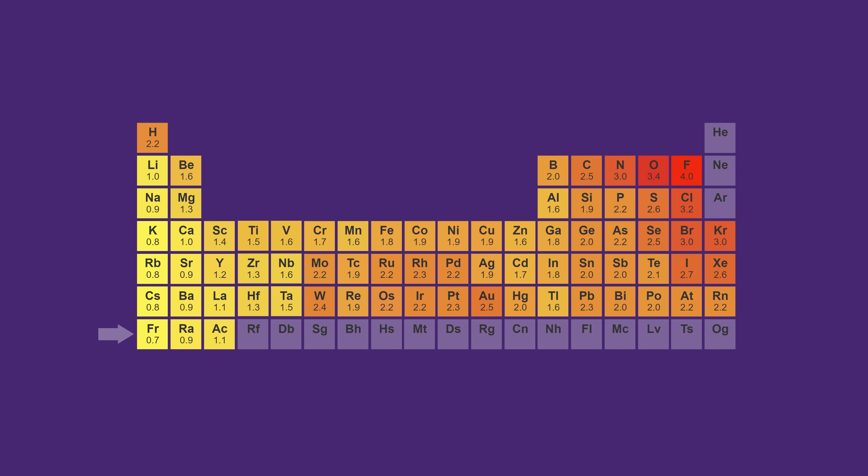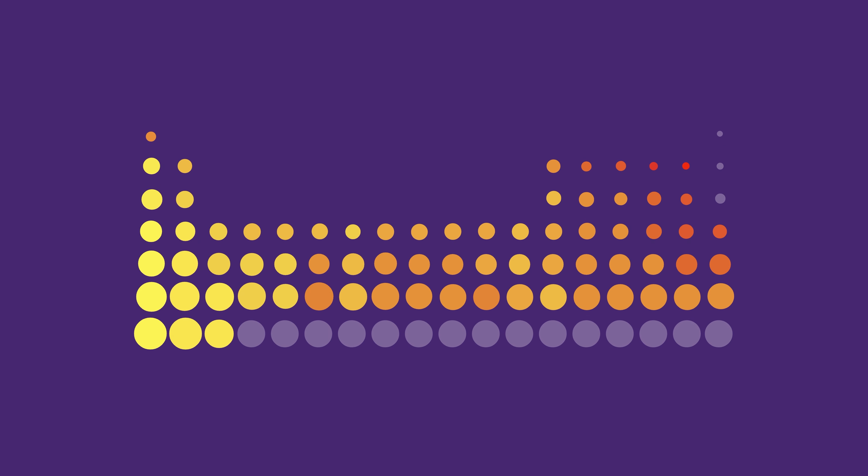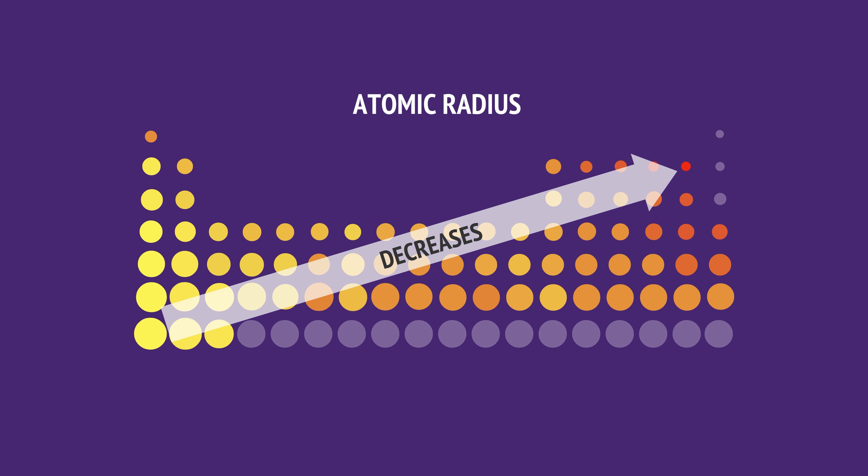The metal francium is the least electronegative element, while fluorine is the most electronegative. And in general, we see these values increase diagonally, like this, across the table, which is related to the trend in the atomic radius. Smaller atoms tend to have higher electronegativity.